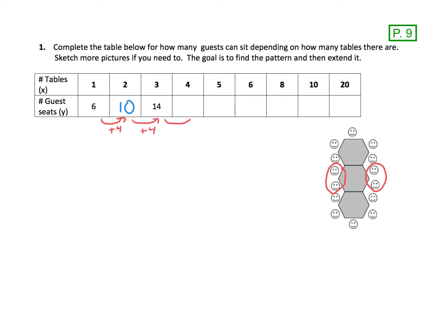So if I extend that pattern, I would have 14 plus four, so 18 people at four tables. Five tables, we would have another four people, so 18 plus four, we're up to 22. And then add four again for six tables, and now we are up to 26.